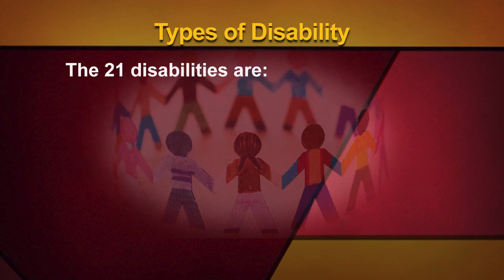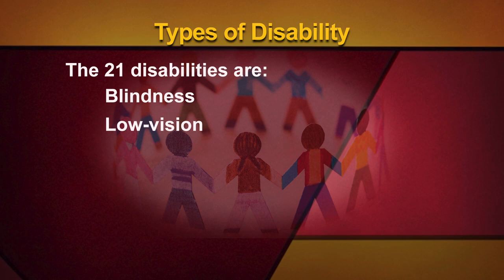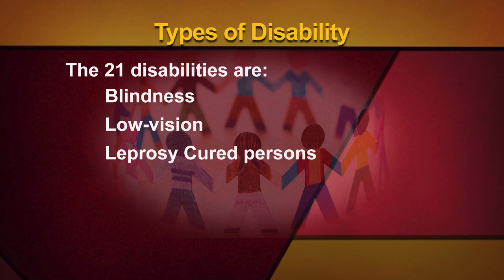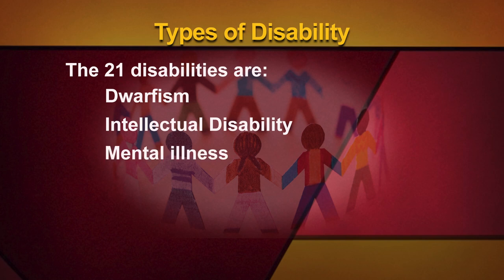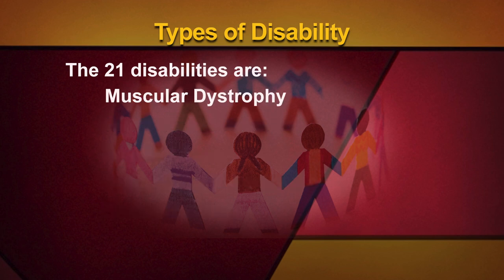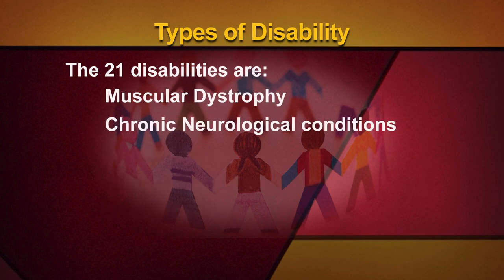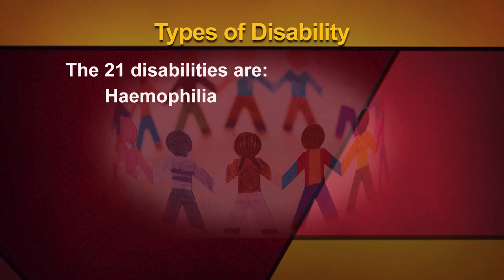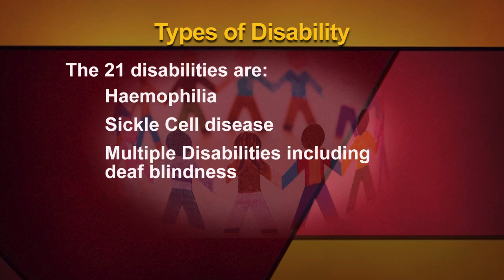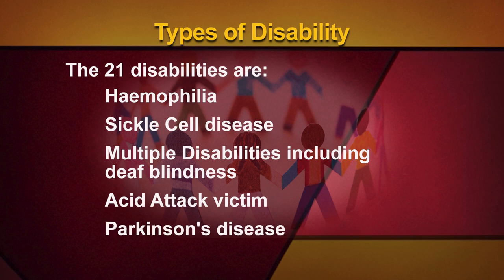The 21 disabilities are: blindness, low vision, leprosy-cured persons, hearing impairment, deaf and hard of hearing, locomotor disability, dwarfism, intellectual disability, mental illness, autism spectrum disorder, cerebral palsy, muscular dystrophy, chronic neurological conditions, specific learning disabilities, multiple sclerosis, speech and language disability, thalassemia, hemophilia, sickle cell disease, multiple disabilities including deaf-blindness, acid attack victim, and Parkinson's disease.